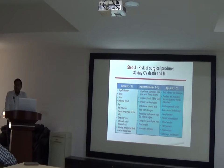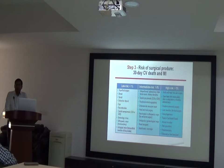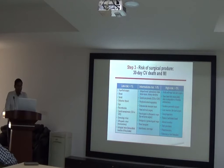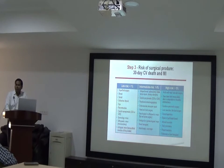Step 3: we discuss the risk of the surgical procedure. Low-risk surgery carries less than 1% risk of perioperative mortality due to cardiovascular injury. This includes superficial surgery, dental, endocrine, reconstructive, minor gynecological, or minor orthopedic surgery — all with a perioperative cardiovascular event risk of less than 1%.